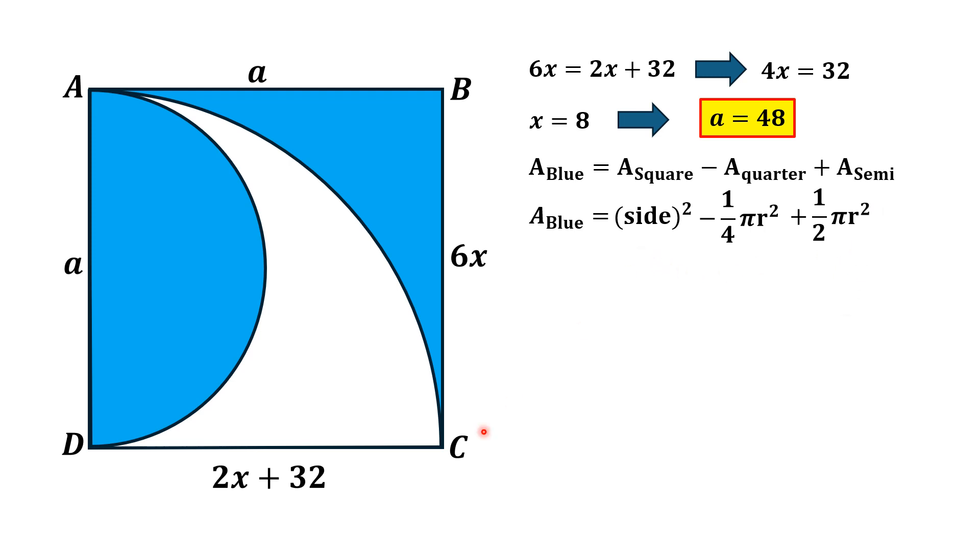The side length of this square is 48, so blue shaded area is equal to 48 square minus 1 over 4 pi times radius of quarter circle, which is 48. And since the diameter of this semicircle is the side length of this square, which is 48, its radius is equal to 24. And thus, area of semicircle will be half times pi times 24 square.